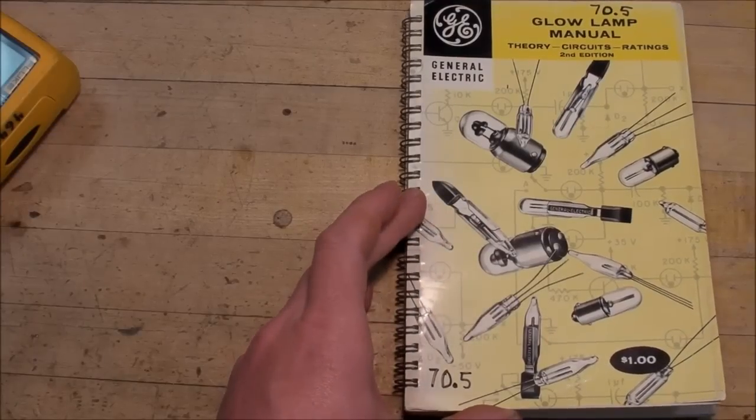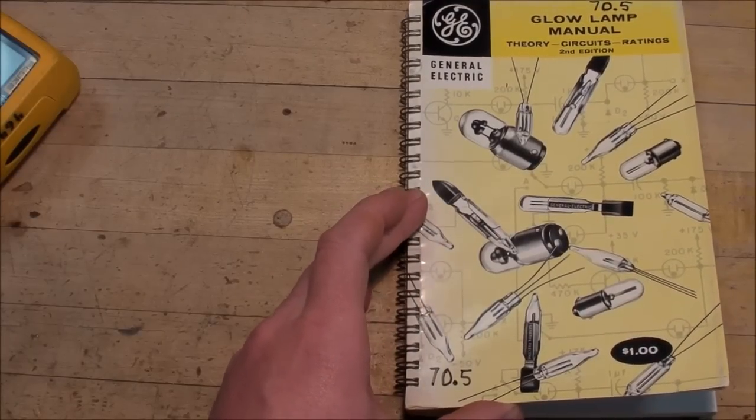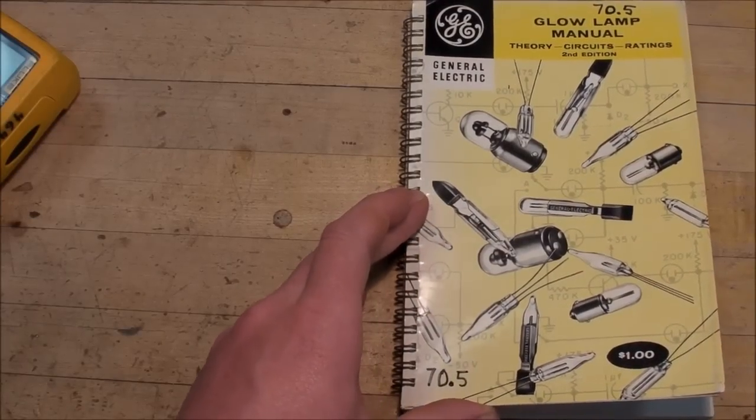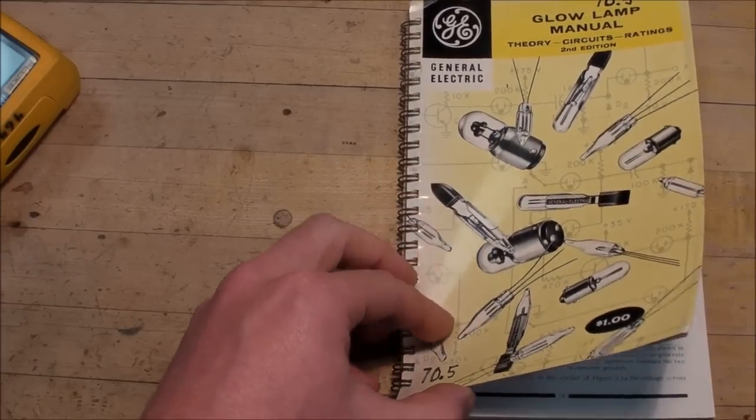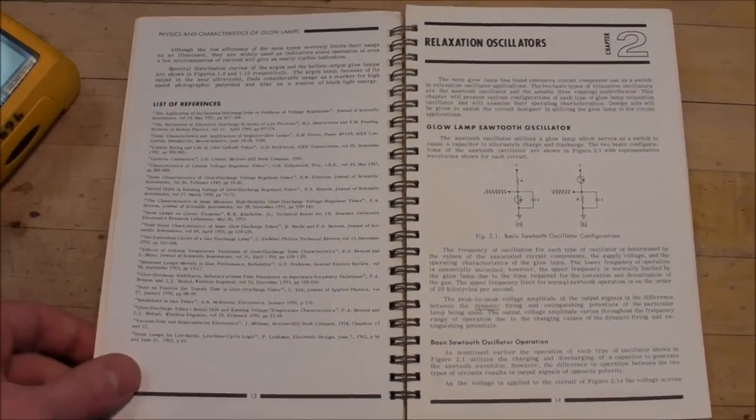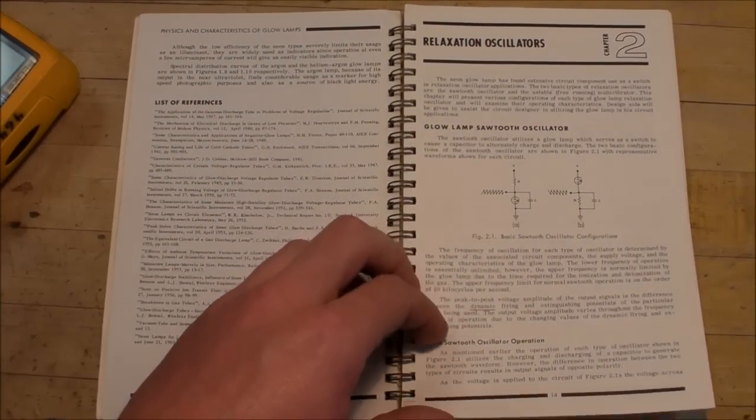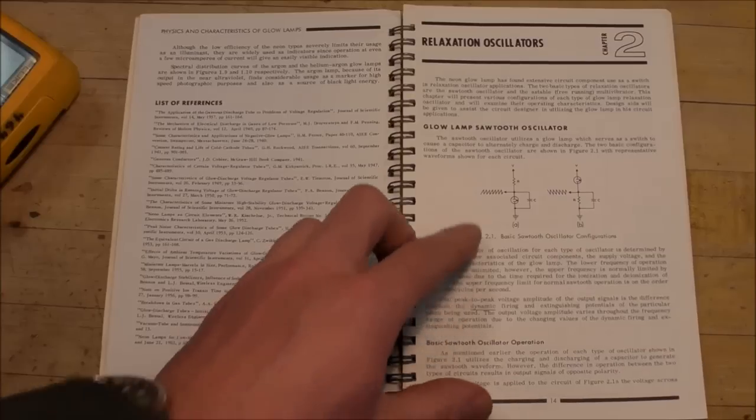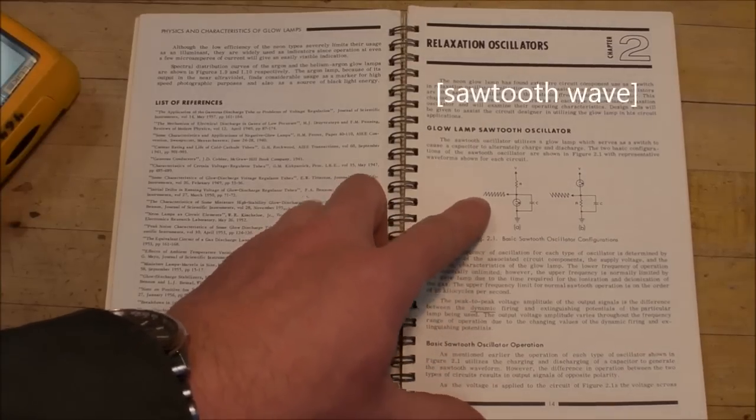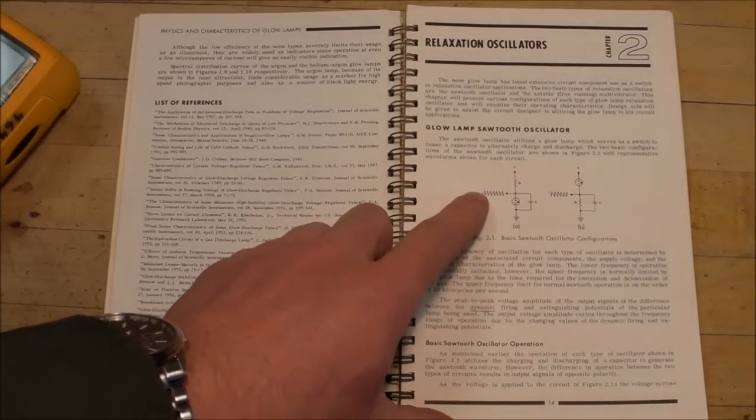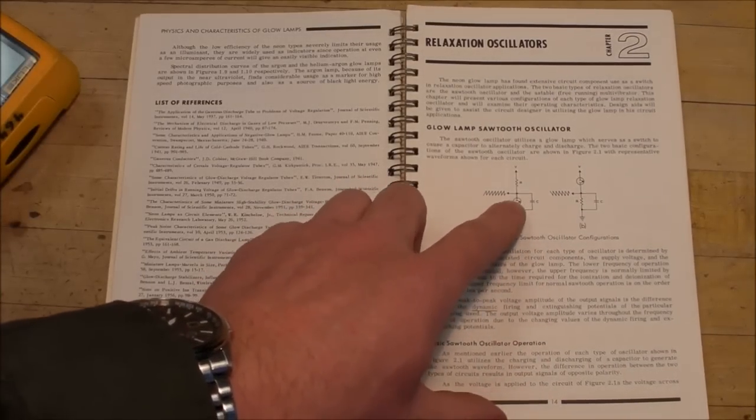And here's the book where I figured out how to make this thing work. I showed this in a different video, but it's the GE glow lamp manual. Everything you ever wanted to know about neon lamps is right in here. Chapter 2 is oscillator circuits. You can make square wave oscillators with these things, and that's what I got going here.